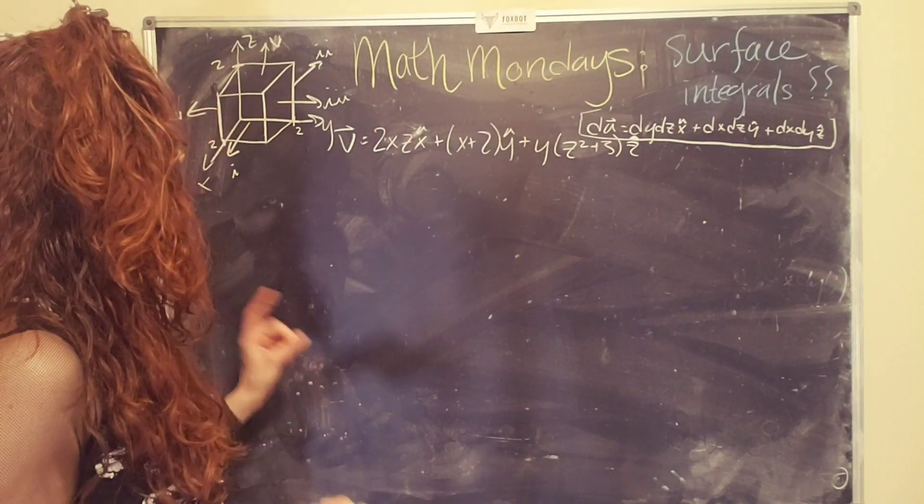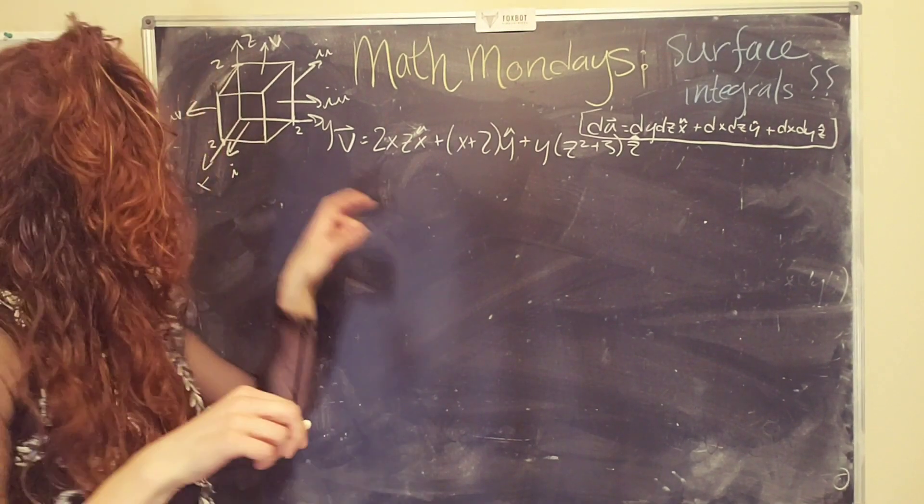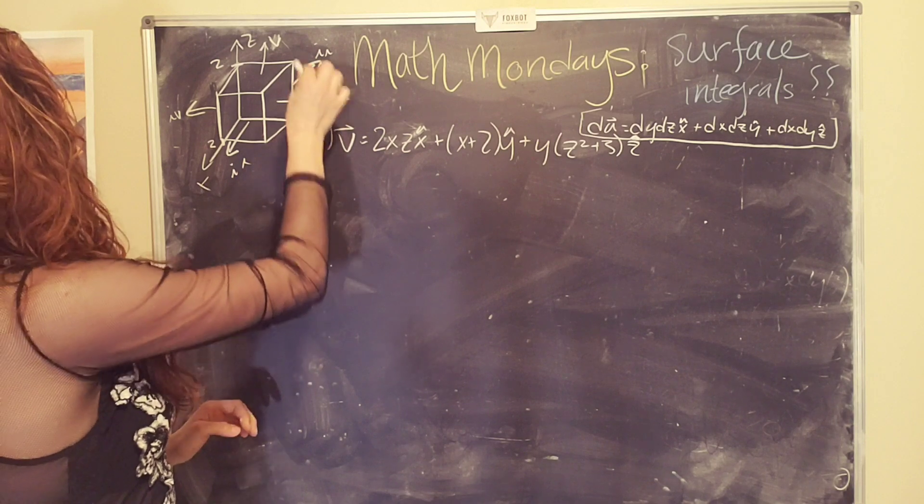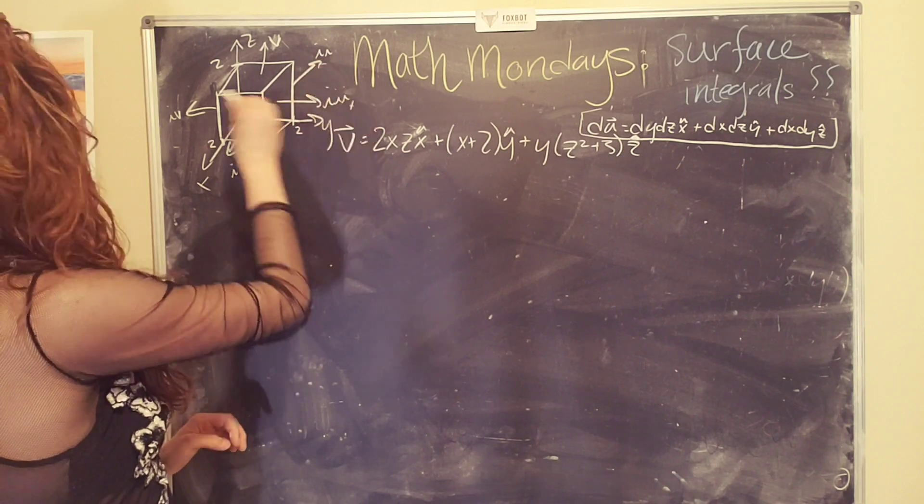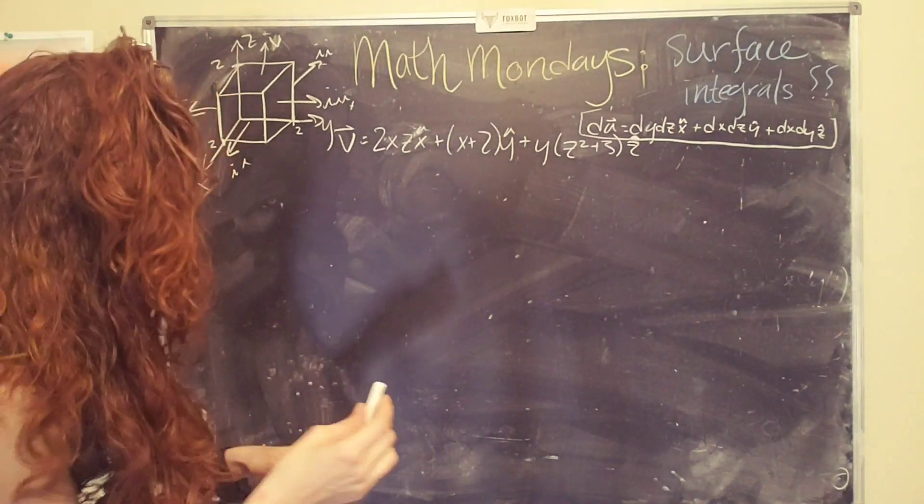The other thing that we need to define is what direction is positive. Well, we can decide. So I'm going to say that this direction is positive. This is negative. This is positive. That's negative. And this is positive. Cool. Okay. So now we're ready to go.